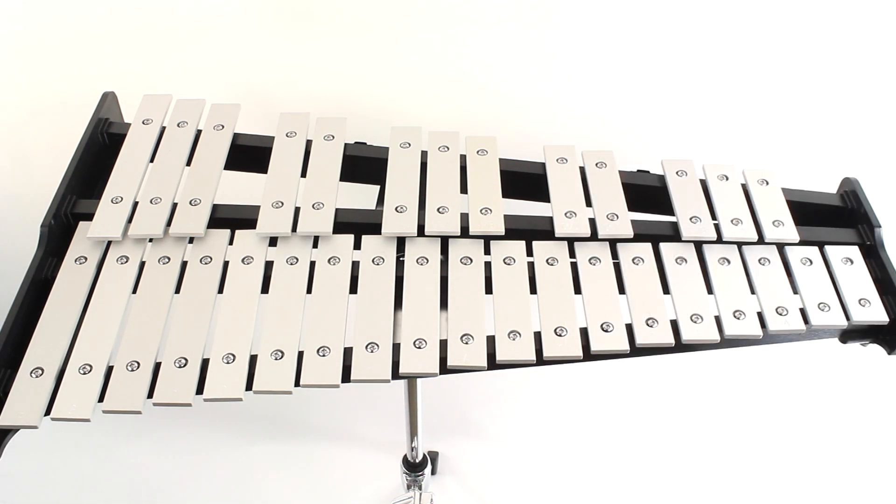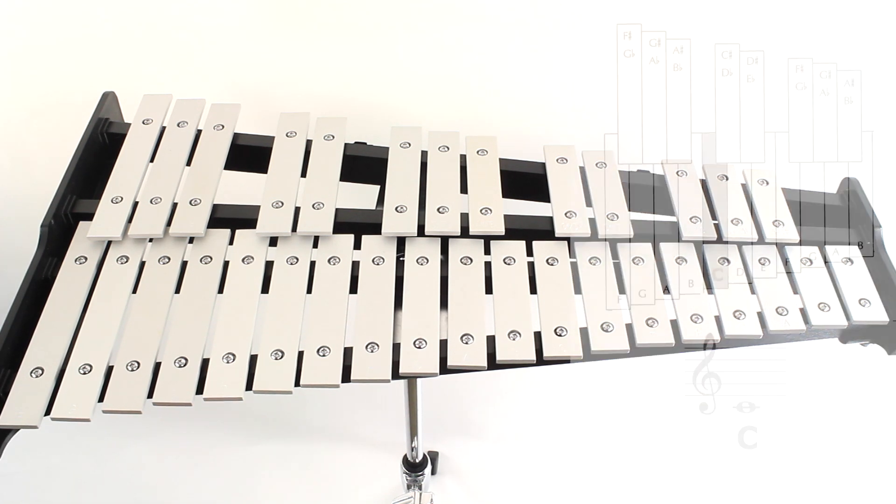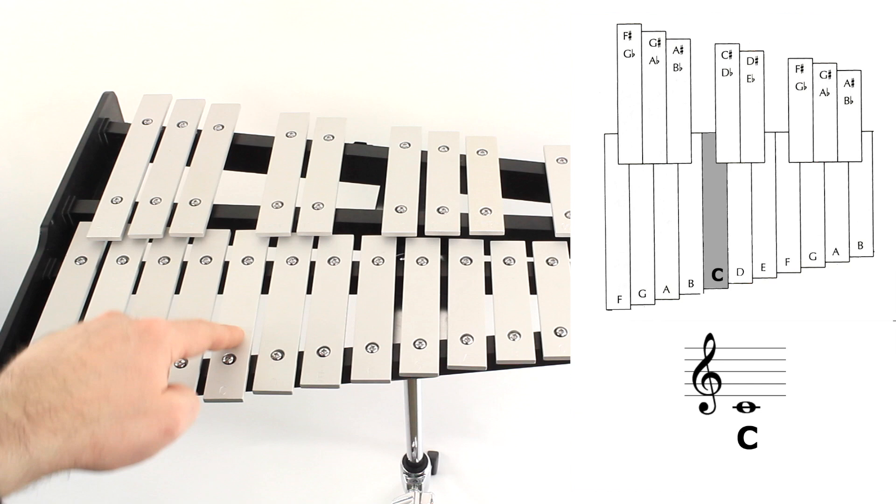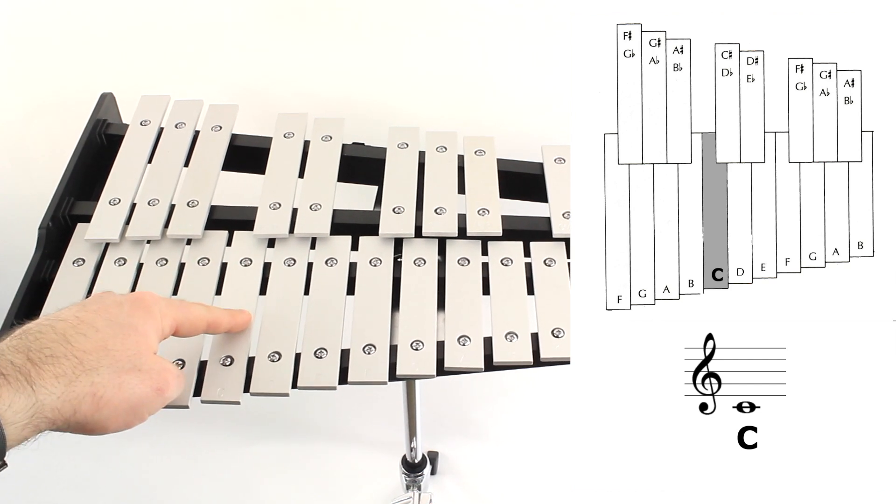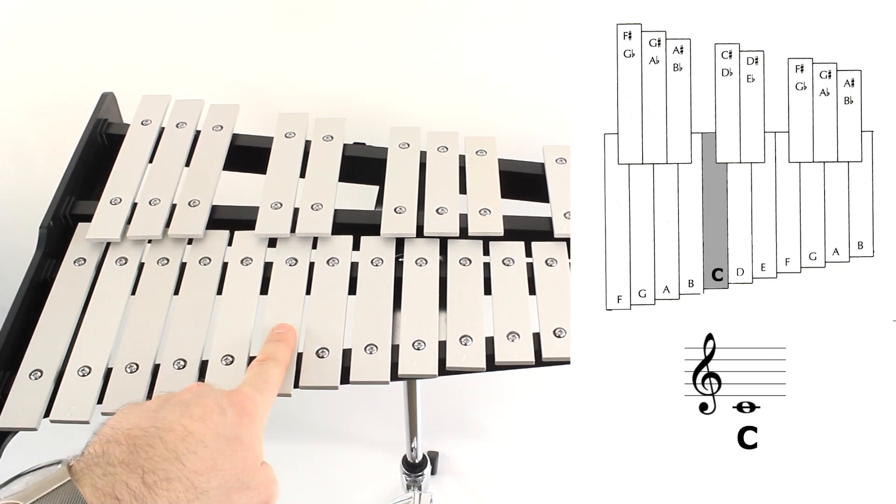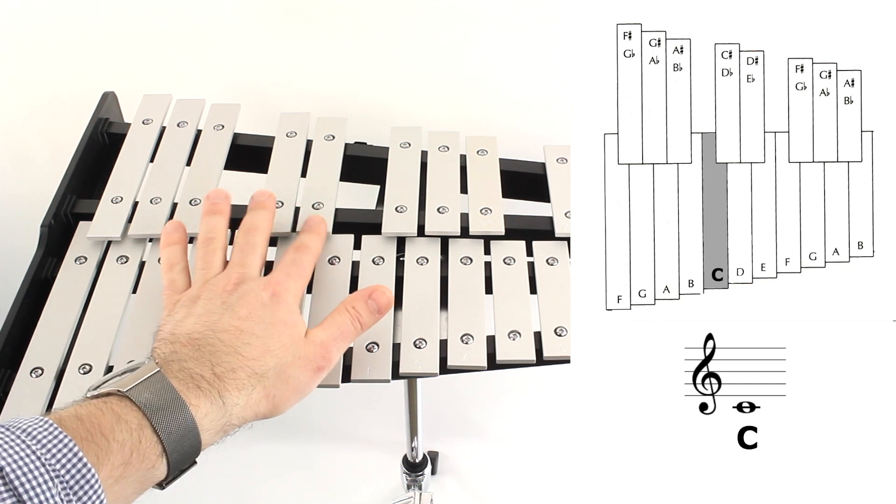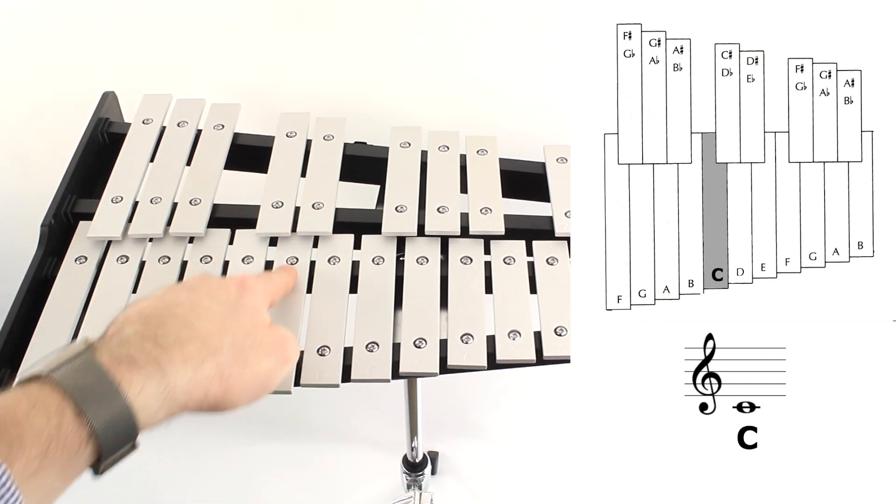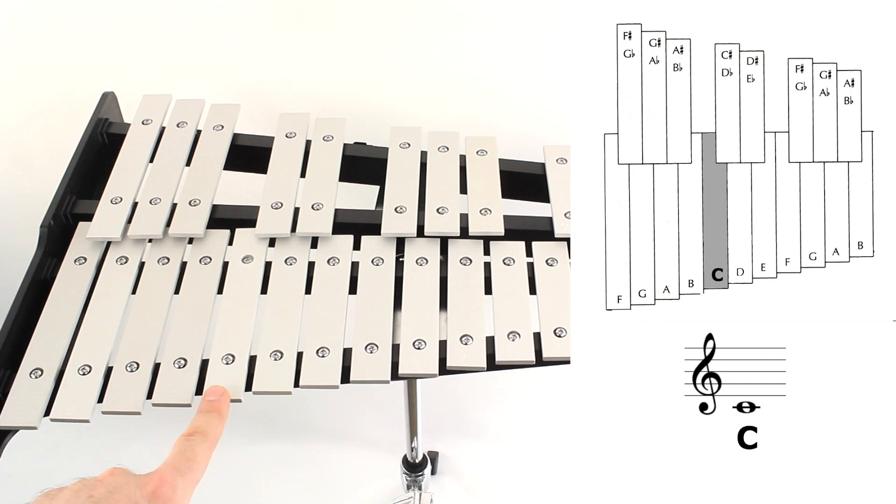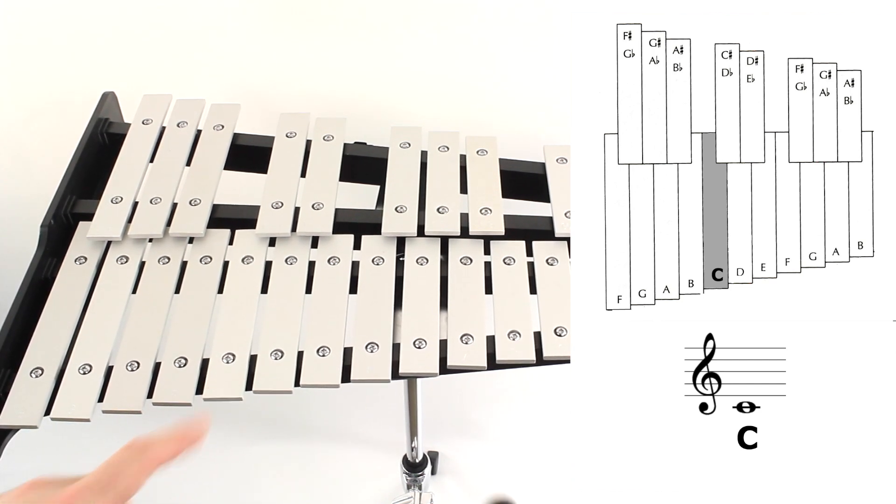Now let's find the note C. Looking at our music staff, we can see that the note C is a little bit lower than the note D and it's written with one ledger line crossing through it. Looking at our note chart, we can see that the note C is the bar directly to the left of our note D. So using our pair of two bars here on the upper row, we found our D right here in the middle, and we're going to go down one to the left, and there is our C. Let's play this note C with our left mallet. Center your mallet right in the center of the bar and tap it lightly.